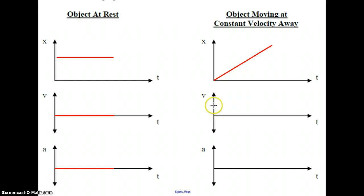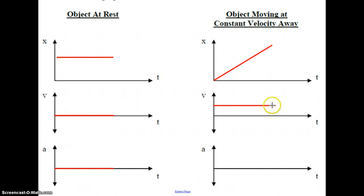On our VT graph, we have some non-zero velocity over that same time interval, and it remains constant — a horizontal line above the time axis. The slope of the XT line is positive up here, so our velocity is positive on our VT graph. We are still not accelerating — this object is not speeding up or slowing down — so its acceleration value is zero, giving a horizontal line on the time axis.